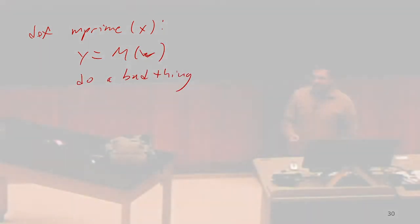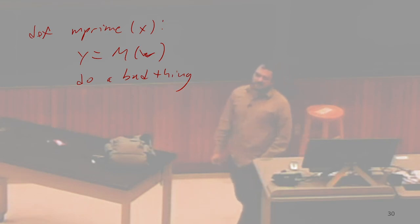So we're going to say, first, let's run M on W. And then afterwards, we're going to do a bad thing. Do a malware thing, something that malware does. Read forbidden memory locations or forward I love you to everybody in your email contact list or something like that.